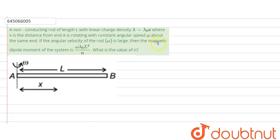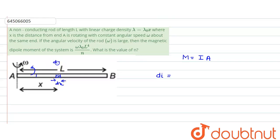Now, magnetic dipole moment is given as current multiplied by area. Now, where is the current? There would be a linear charge density, and it is rotating with angular velocity, meaning the charge is rotating. So there would be an equivalent current generated. The small current di would be due to a small charge. Let us define a charge at a location dx. The small charge dq would be equal to lambda multiplied by the length element dx, so dq equals lambda times dx. The current di would basically be the rate of flow of charge, so it would be dq divided by time.